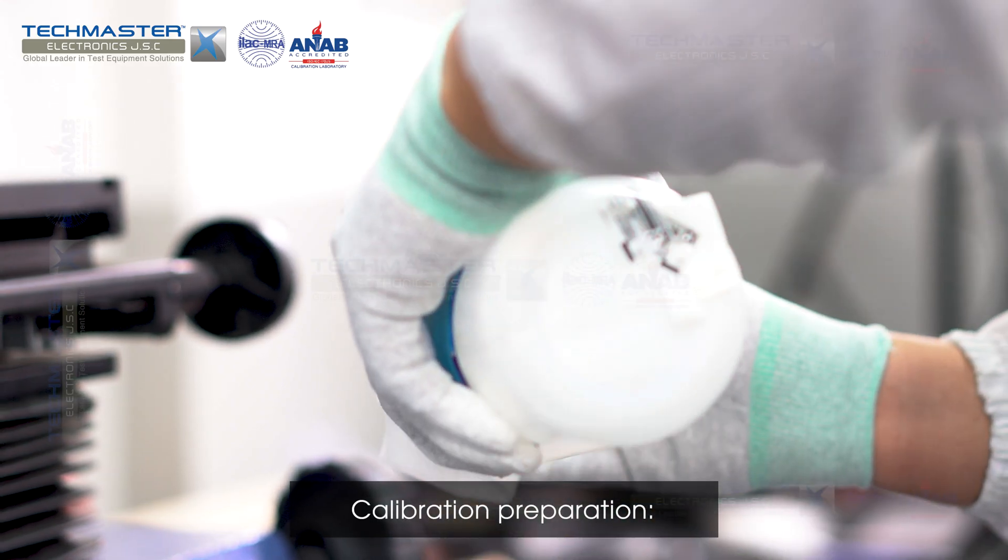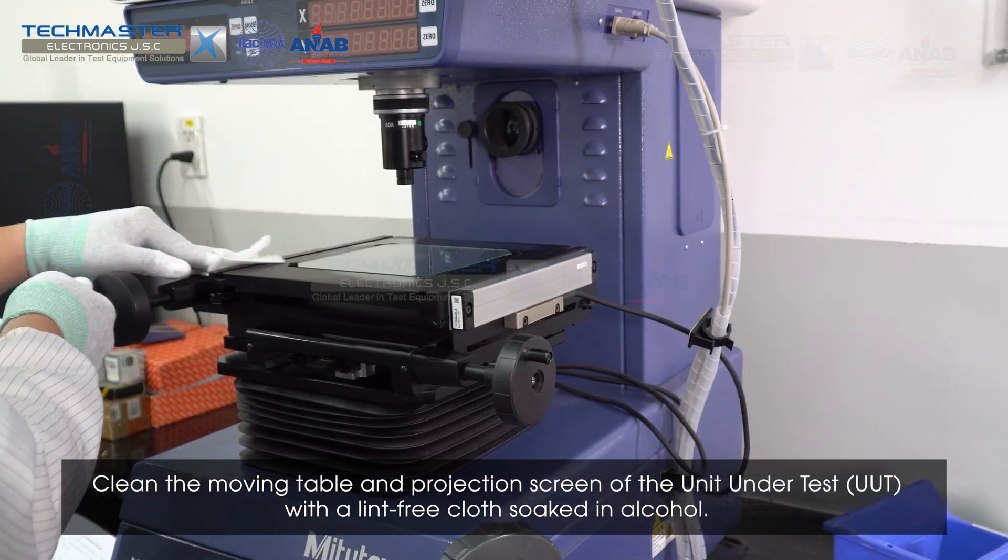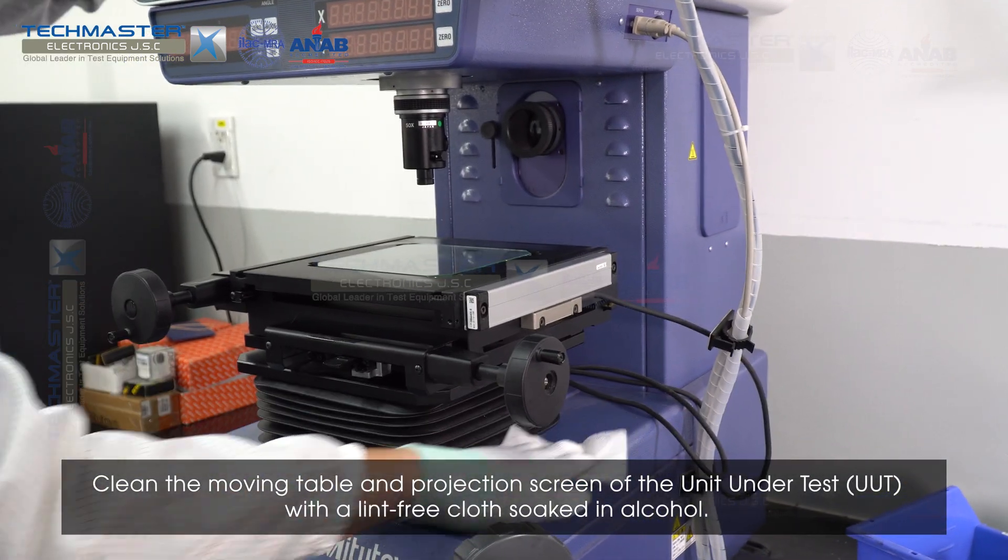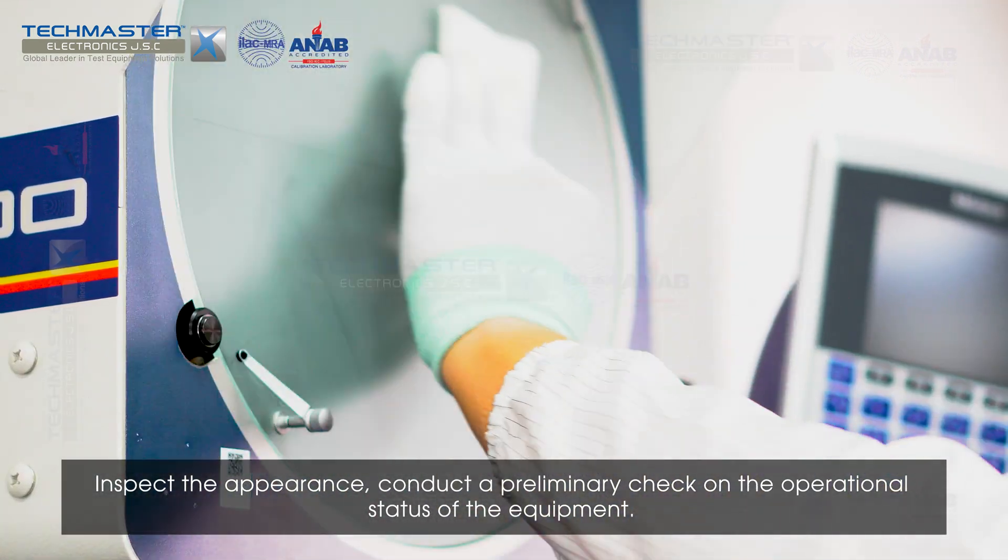Calibration Preparation: Clean the moving table and projection screen of the unit under test with a lint-free cloth soaked in alcohol. Inspect the appearance and conduct a preliminary check on the operational status of the equipment.